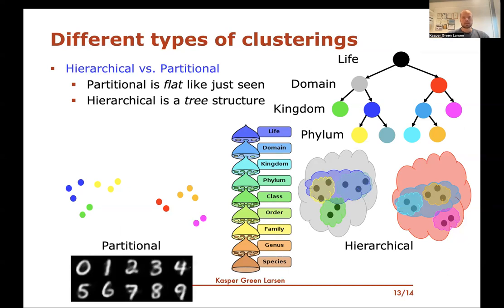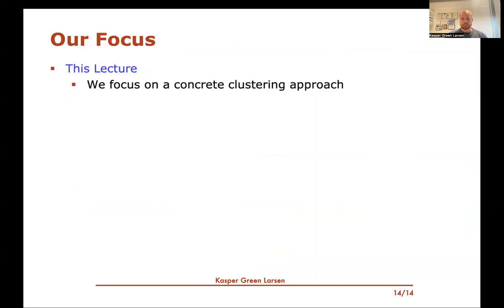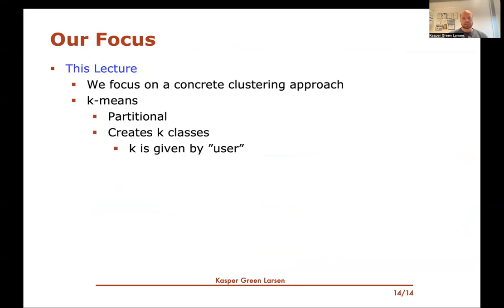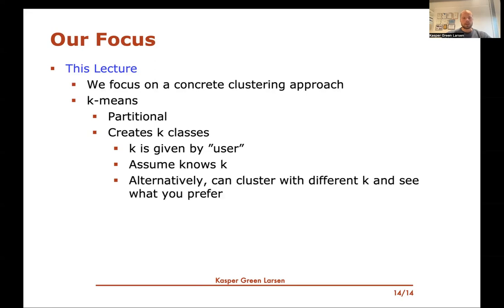Our focus in this sequence of videos, and the next two in particular, is one concrete clustering approach called k-means clustering. This is a partitioning clustering approach that creates k clusters, where k is given by the user who invokes the algorithm. We assume we know which k to go for, though alternatively you can try different values of k and compare outcomes. To learn more about other clustering algorithms and methods, I suggest finding additional material online.